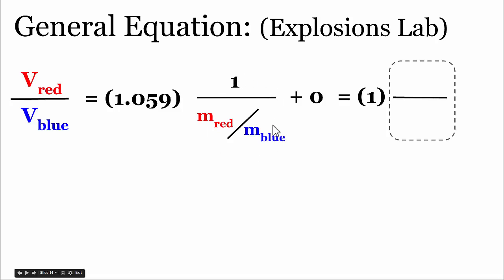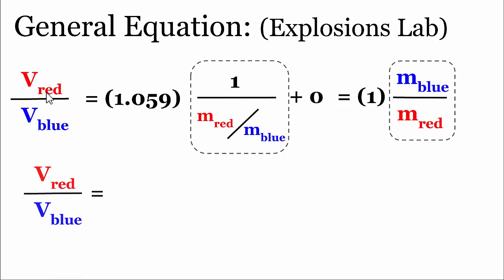And if we re-express the x variable, being the inverse of the mass ratio that we initially measured, it turns out to be the blue mass divided by the red mass. We can now say that our general equation is the velocity ratio of red to blue is equal to the mass ratio of blue to red.